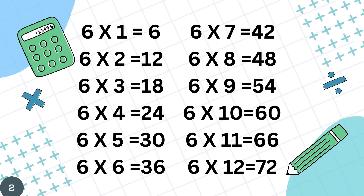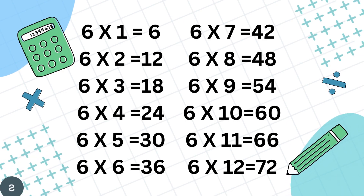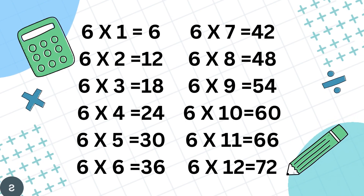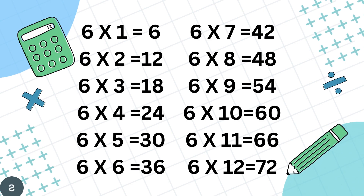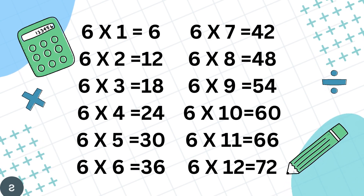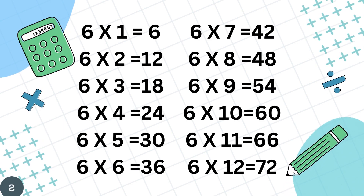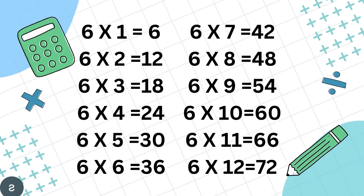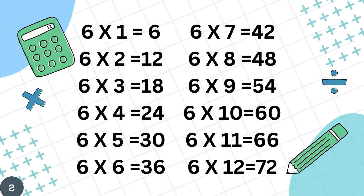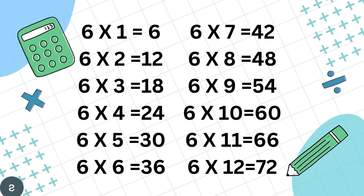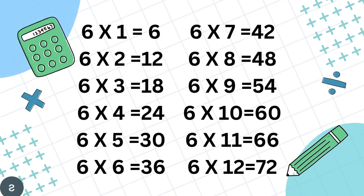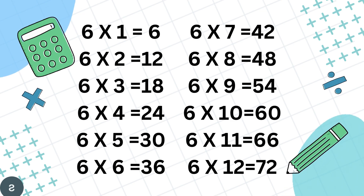Table of 6. 6 1's are 6, 6 2's are 12, 6 3's are 18, 6 4's are 24, 6 5's are 30, 6 6's are 36, 6 7's are 42.